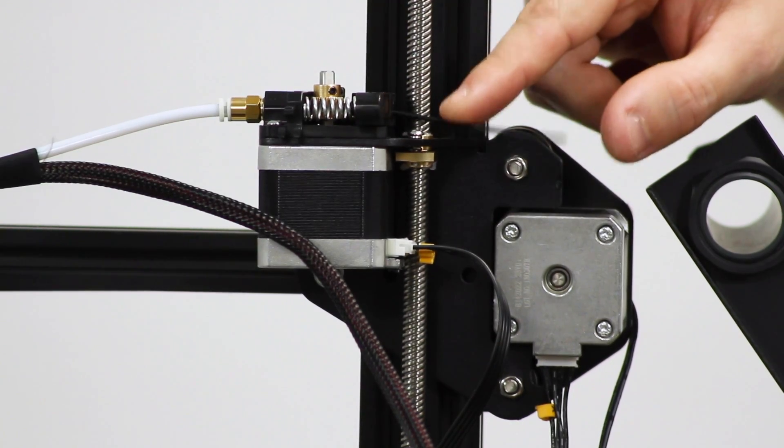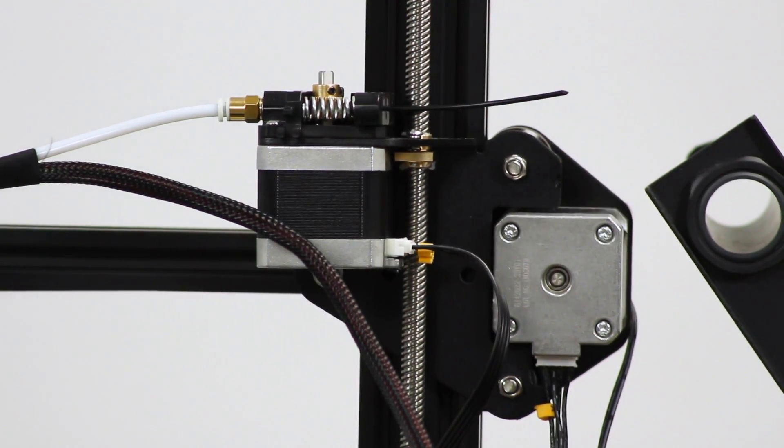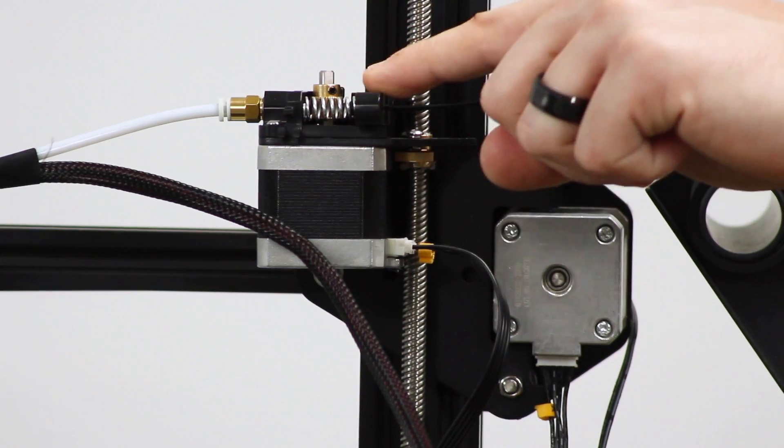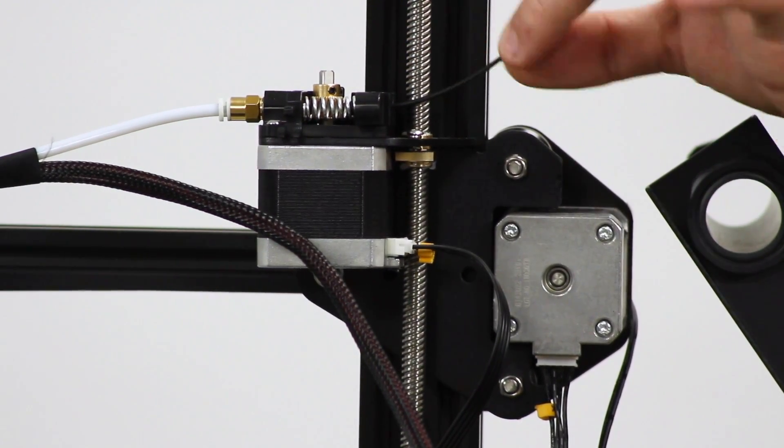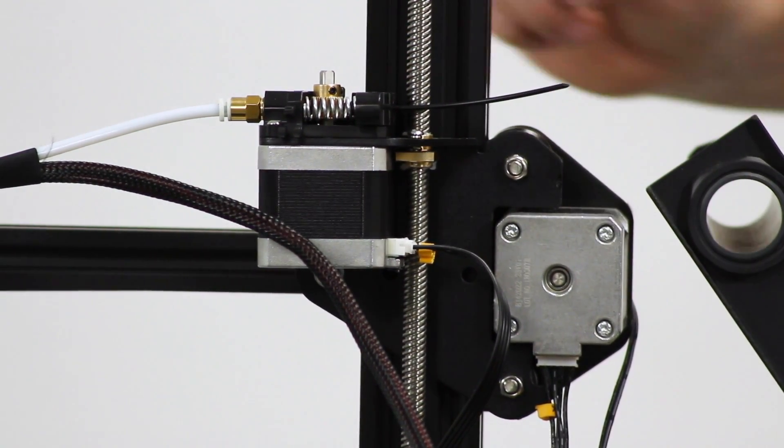But one thing that I think I mentioned in a previous video is you can end up with a groove in the inlet of this lever arm here, where the filament gets kind of snagged in there over time.